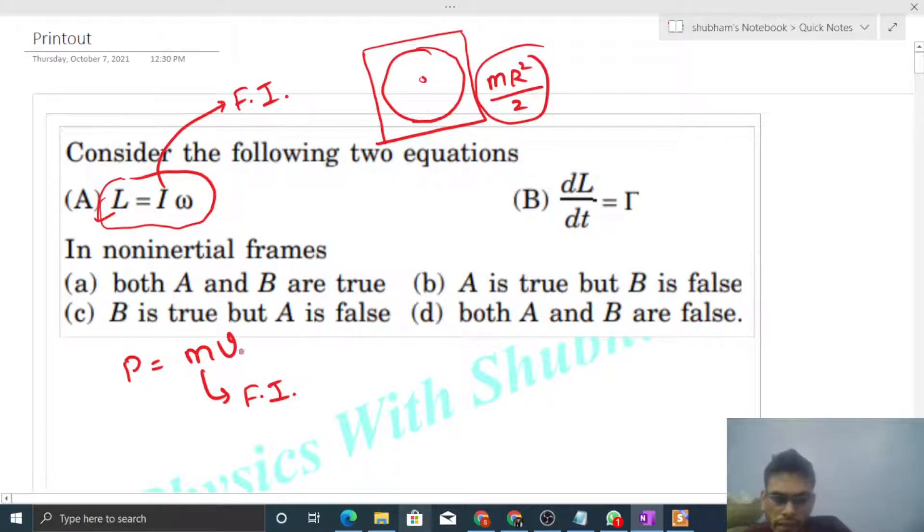Now this is the velocity. The velocity is frame dependent. So here the omega, that is the angular velocity, this is frame dependent. Let's say this disk, if you can see this disk, so this is rotating with some angular speed omega.